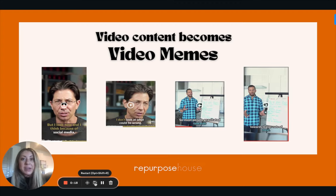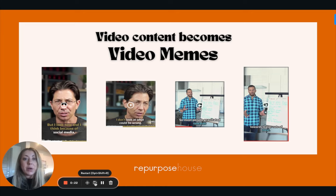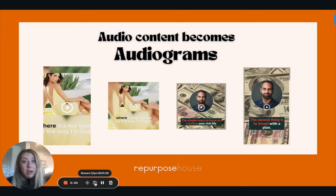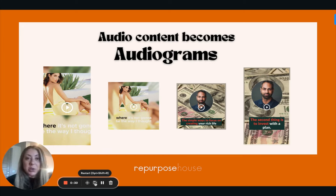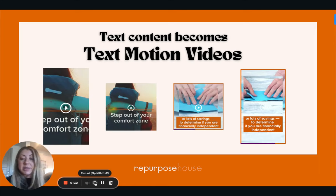With your video content, we'll take what you have and turn that into 59-second videos we will call video memes. With audio content, we'll take whatever you have podcast-wise or audiobook-wise, any audio, and turn that into short form videos that we call audiograms.